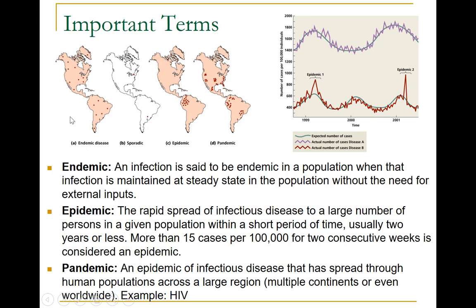Assuming the level is not high enough to deplete the pool of susceptible persons, the disease may continue at this level indefinitely — thus the baseline is regarded as the expected level. Occasionally the amount of disease in a community rises above the expected level. Epidemic refers to an increase, often sudden, in the number of cases above what is normally expected. Outbreak carries the same definition but is used for a more limited geographic area. Pandemic refers to an epidemic that has spread over several countries or continents, usually affecting a large number of people.